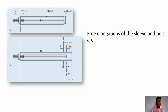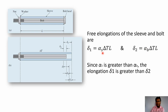The free expansion for sleeve and bolt are given by: delta_1 = alpha_s × delta T × L, and delta_2 = alpha_b × delta T × L, where alpha_s is the coefficient of thermal expansion for the sleeve and alpha_b is for the bolt. Since alpha_s is greater than alpha_b, the free expansion for the sleeve will be more, that is delta_1 will be greater than delta_2. This can also be seen in the diagram where delta_1 is greater than delta_2.